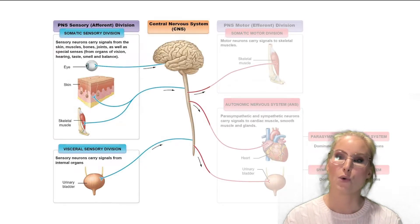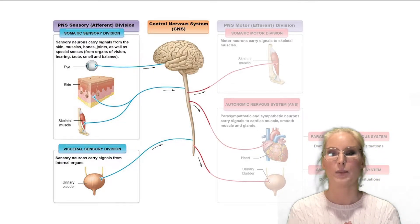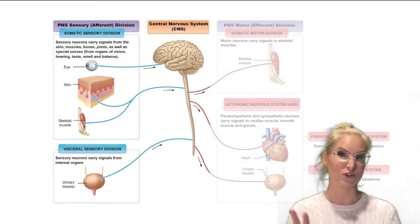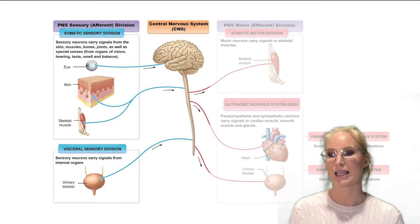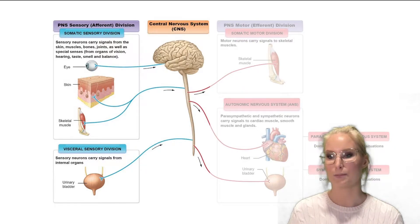So in terms of how somatosensation fits into the divisions of the nervous system, it happens as part of the sensory division of the peripheral nervous system. So the sensory division can actually be further divided into two other divisions. So there's the visceral sensory division, which is taking in all that information from our internal organs. So like our heart, our lungs, our blood vessels, our bladder and so forth.